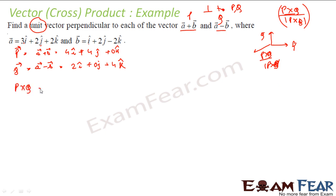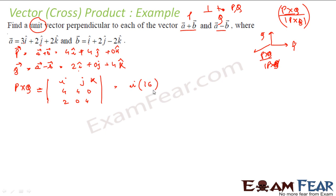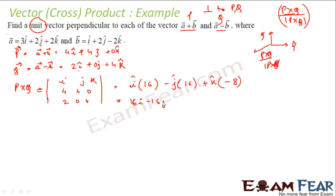P cross Q is the determinant with i, j, k in row one; 4, 4, 0 in row two; 2, 0, 4 in row three. Expanding: i(4×4 − 0×0) = 16i, minus j(4×4 − 2×0) = -16j, plus k(4×0 − 4×2) = -8k. So P cross Q = 16i − 16j − 8k.